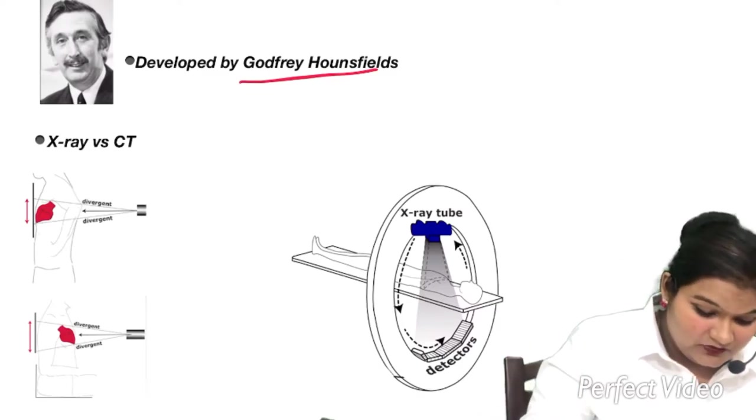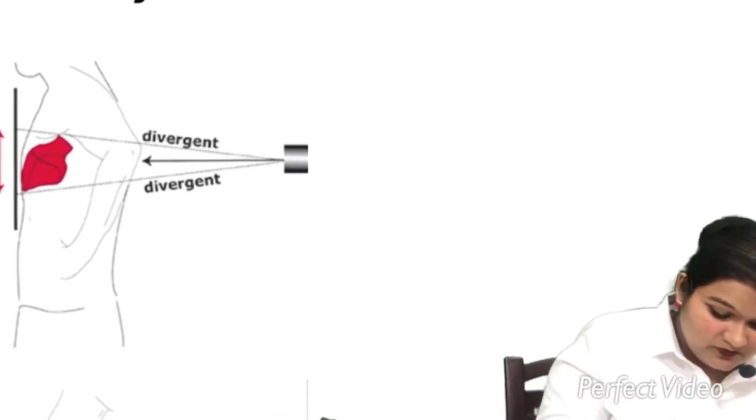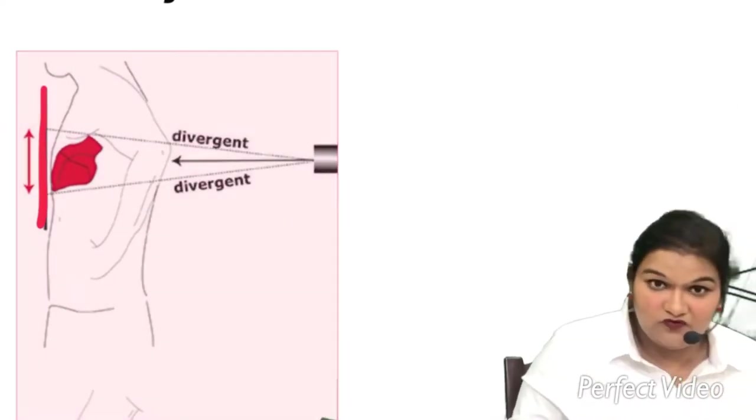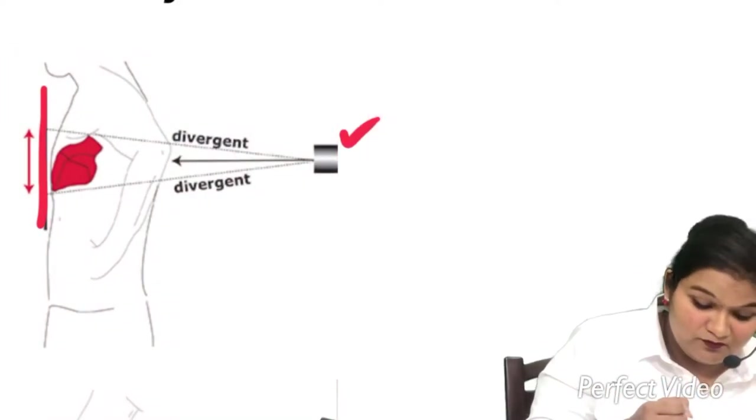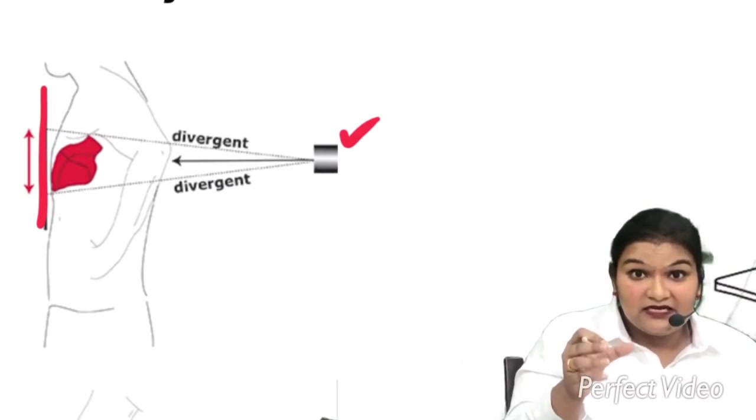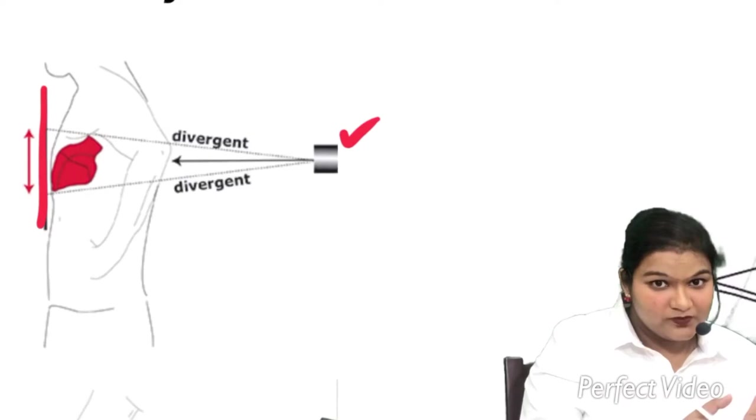So what happens, just see over here. This is a human body. We have a film over here and this is the source of X-ray. This X-ray hits the human body and depending on the density and the degree of X-ray passing through the structure, you get the film.